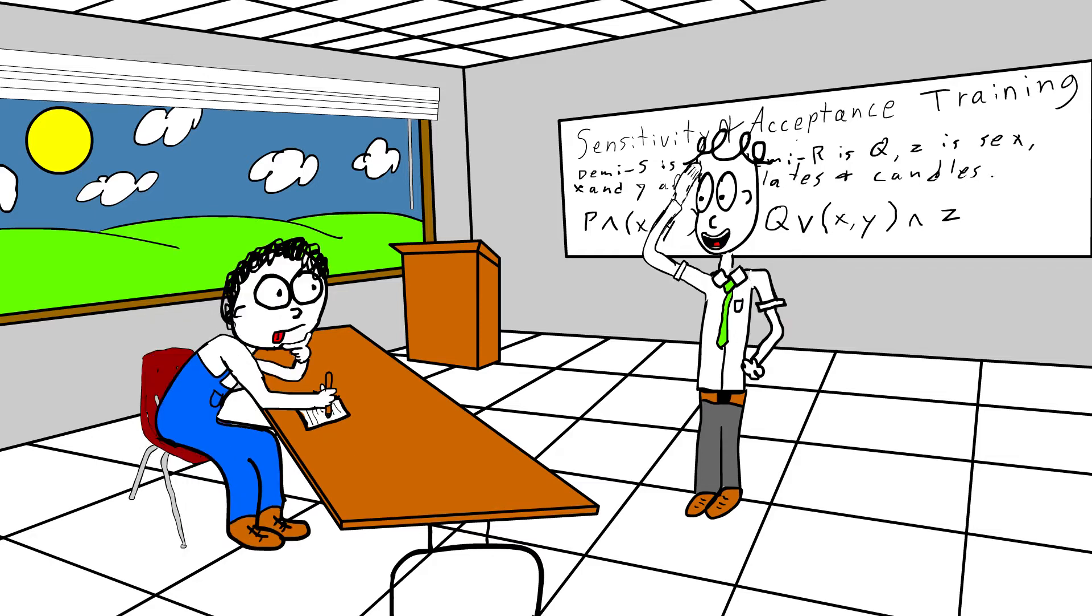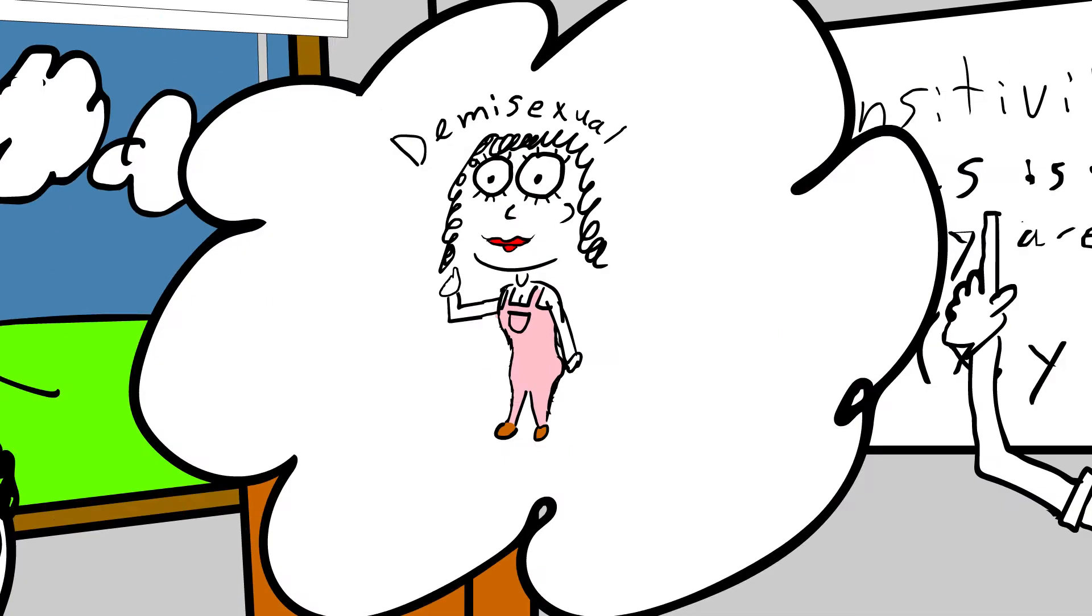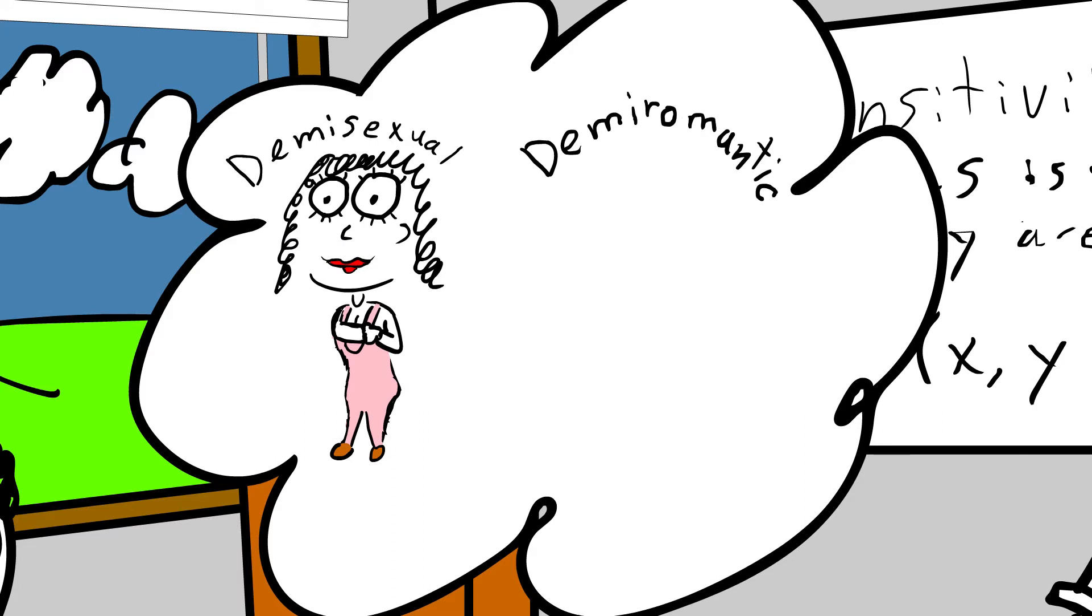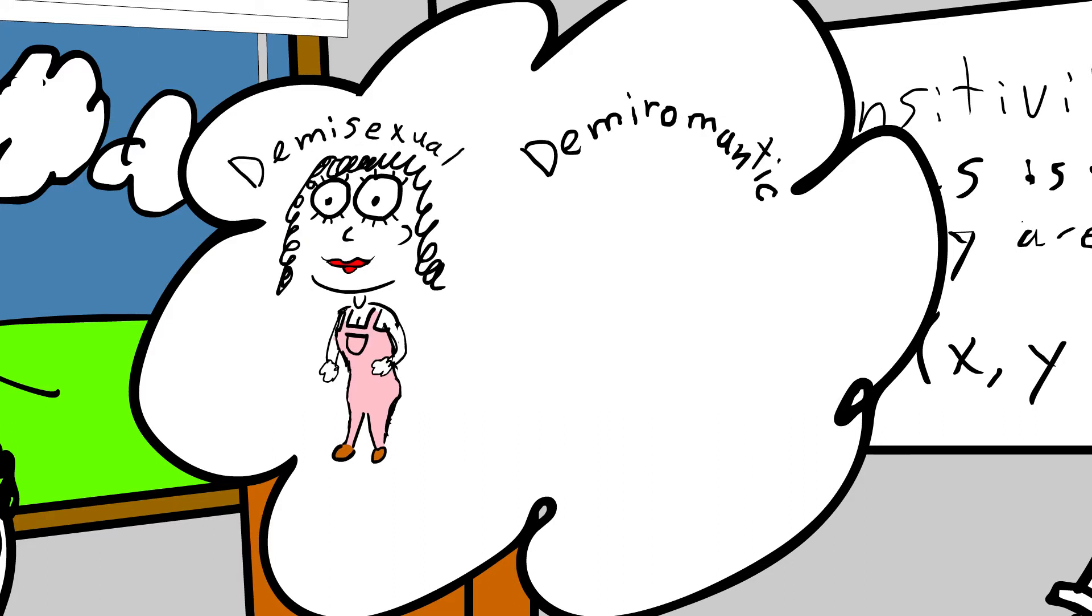I can explain it to you. Demisexual means for a girl, think of a girl and she goes, before I fall in love with you I can't have sex with you till I feel like I'm falling in love with you, right?